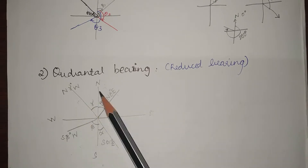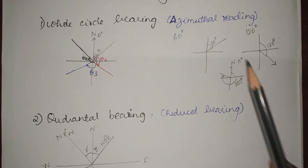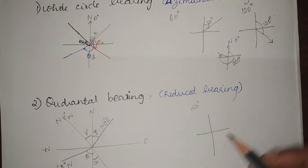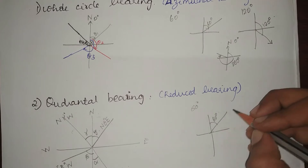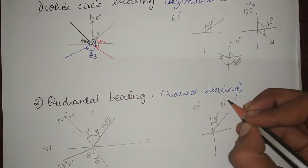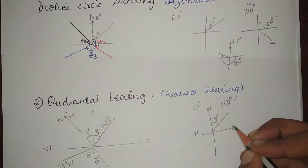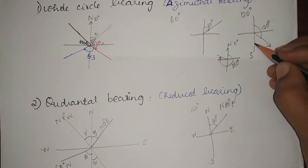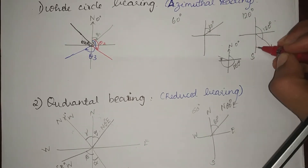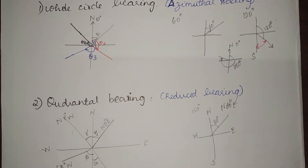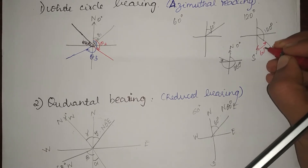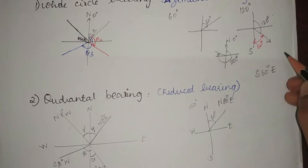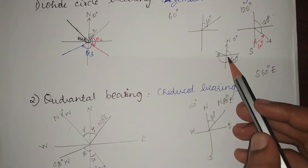The same applies for other quadrants. In quadrantal bearing, 60 degrees will be represented as North 60 degrees East. For 120 degrees, you have to measure the angle from south — this is 90 degrees plus 30 degrees gives 120, so 120 degrees is represented as South 60 degrees East. And 280 degrees would be North 80 degrees West.